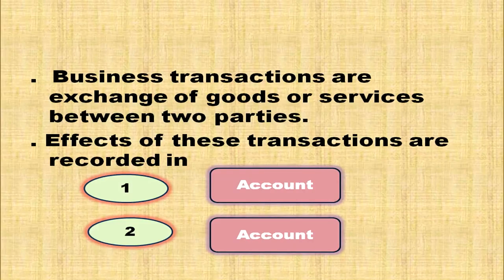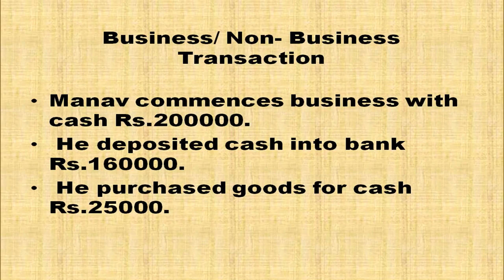The first effect will be recorded in one account and the next effect will be recorded in the second account. Let us identify whether these are business transactions or non-business transactions. Manav commences business with cash rupees 2 lakh. Definitely, it is expressing everything in terms of money and it is relating to a business, so it is a business transaction.